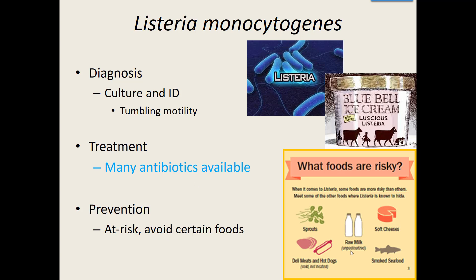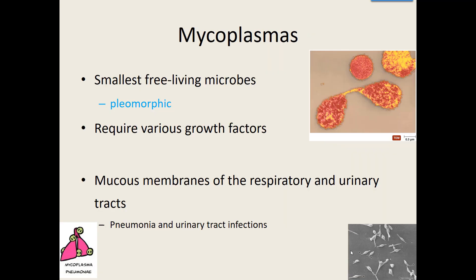The next genus in our gram-positive rods that don't make endospores are Mycoplasmas. They're the smallest of our gram-positive bacteria, they're free-living, and they are also pleomorphic. They can't make their own peptidoglycan, so when we gram stain them they actually look gram-negative, but they are genetically gram-positive. They're tricky to grow and usually require various growth factors in the lab. For a lot of individuals, they're found in the mucous membranes of both the respiratory tract and the urinary tract, causing pneumonia in the respiratory tract and UTIs in the urinary tract.